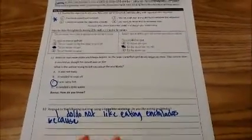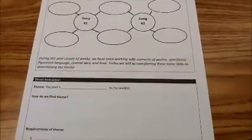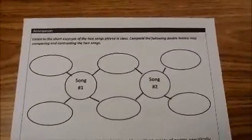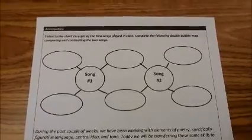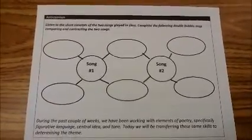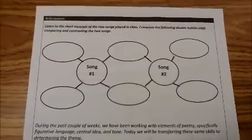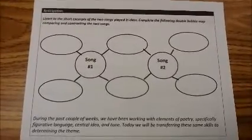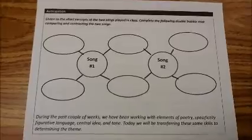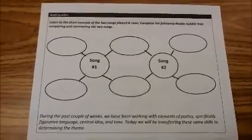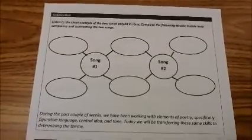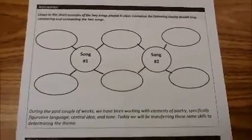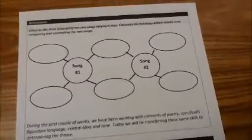Now we're ready to move on to the next portion of our lesson, which is an anticipatory set. I will be playing you two sections of songs that have a similar theme. You are going to compare and contrast the two different songs in your double bubble map. First, I will play you song number one. I'll warn you — these are songs I picked out specifically because I knew you would not be so familiar with them. You may not like the song, but that is not the point of this lesson.